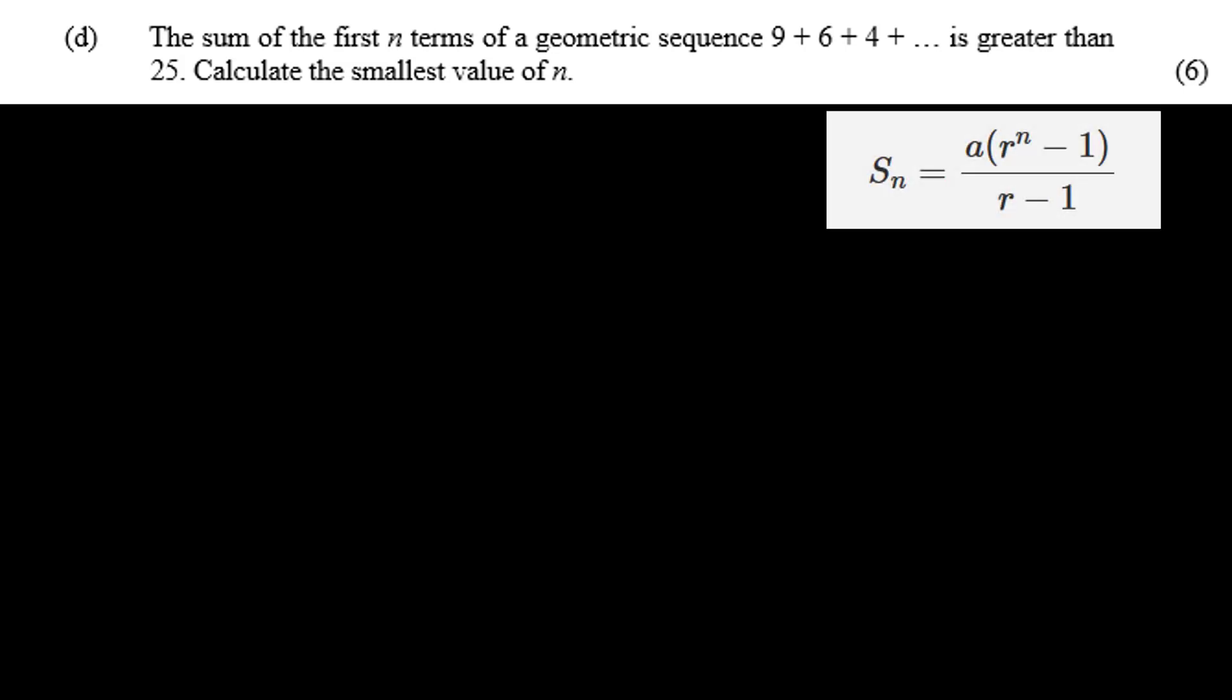Alternatively, if you don't have the stomach for brute force, we can use the formula for a series from your info sheet. Sn equals A times R to the N minus 1 over R minus 1.